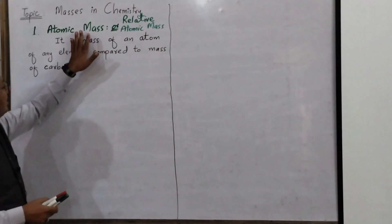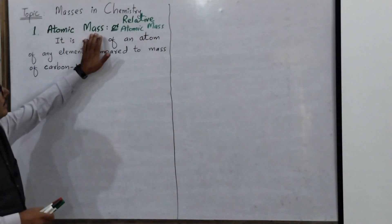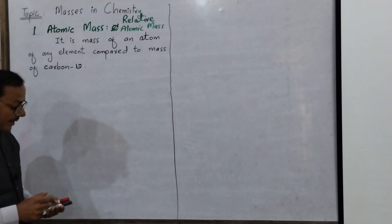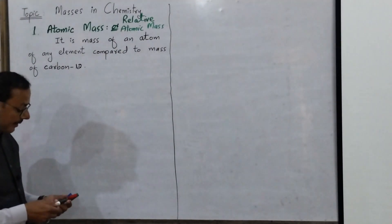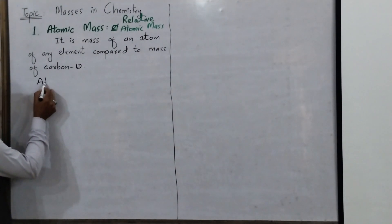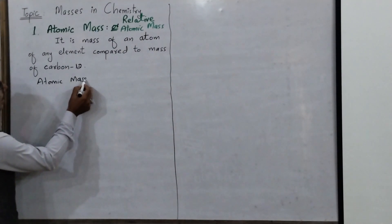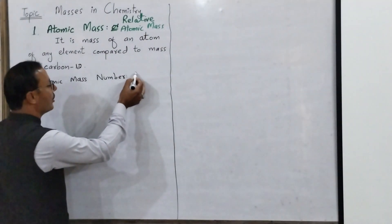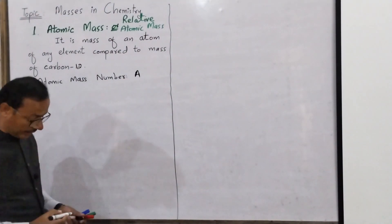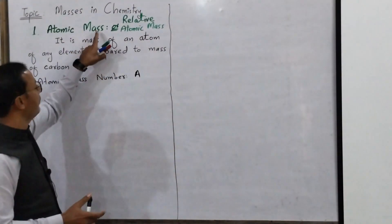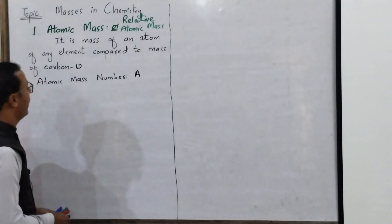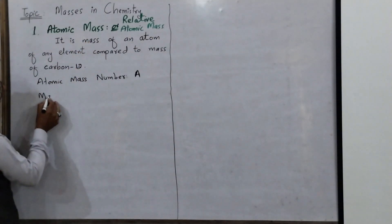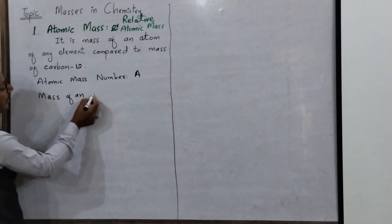So let's come to study first: atomic mass. This atomic mass is also called relative atomic mass. Atomic mass — we call it relative atomic mass. Atomic mass number is a different thing. Here we are discussing atomic mass, whose other name is relative atomic mass.